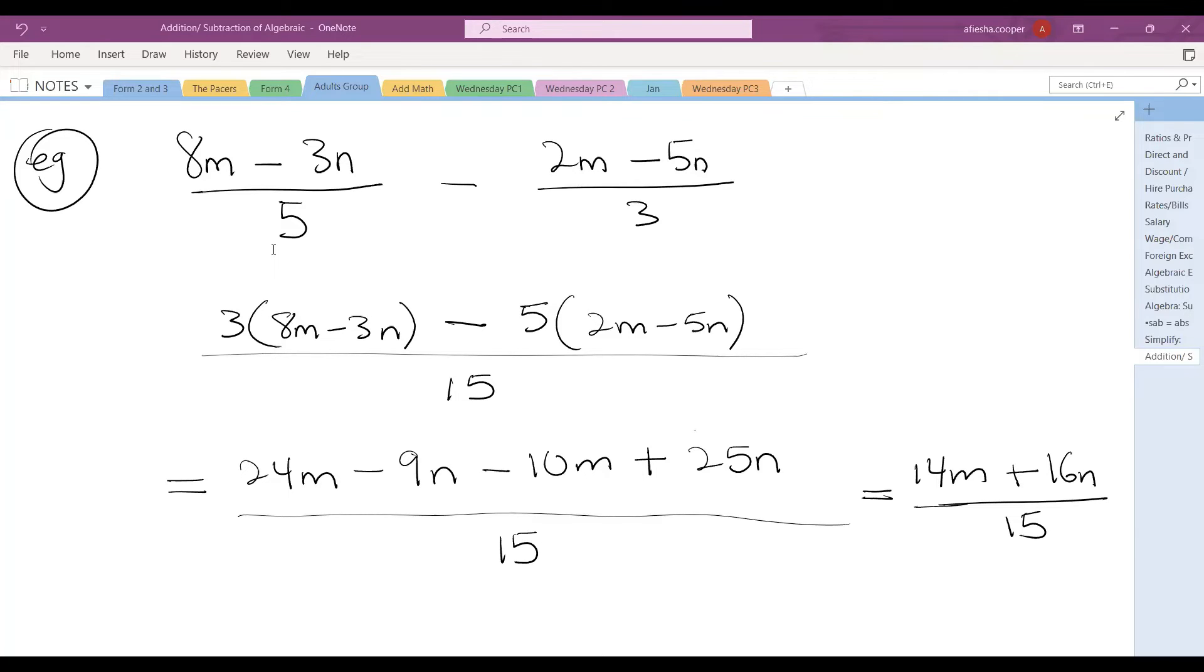So we distributed, we found the LCM which is 15, we followed the same rules, 5 into 15 is 3, and it is very important for us to put brackets here. Very important because if you just put this on, we'll just multiply the 3 by 8 alone, but it's 3 by the entire thing, 5 by the entire thing. We distribute it out and simplify, and this will be our final answer.